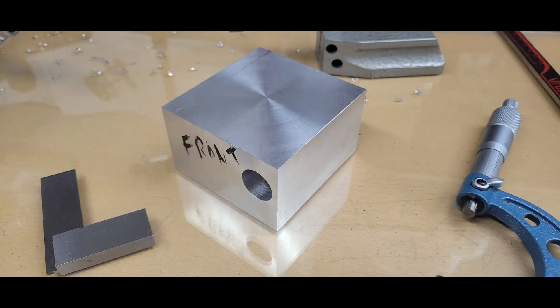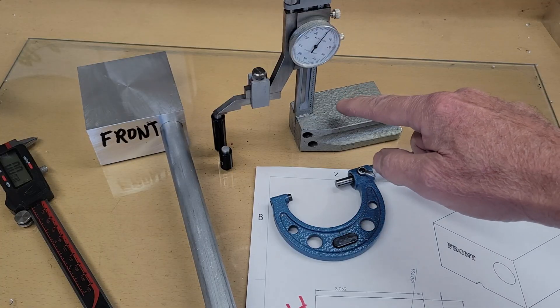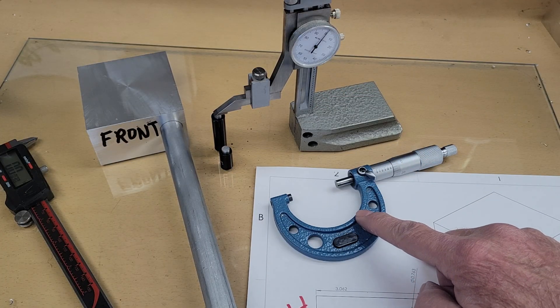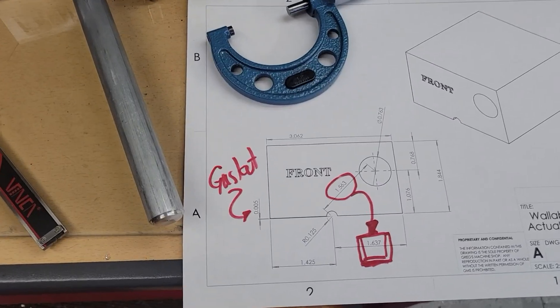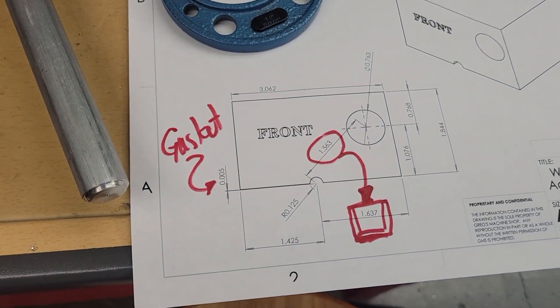Now it's time to go back to the surface plate, just a sheet of glass at my shop, and use the dial height gauge in conjunction with gauge blocks and the micrometer to accurately measure the crankcase. I make a drawing of actual dimensions in preparation for the machining of the crankcase bottom.